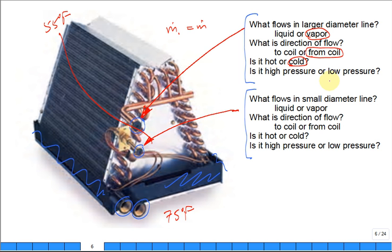Is it high pressure or low pressure? Low pressure. The evaporator is at low pressure. What's at high pressure? The other coil. What's the name of the other coil? The condenser is at high pressure.